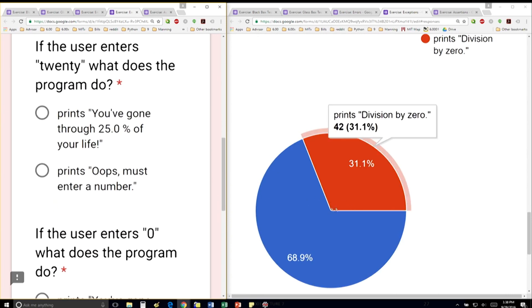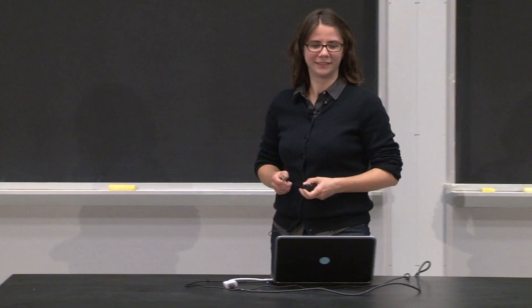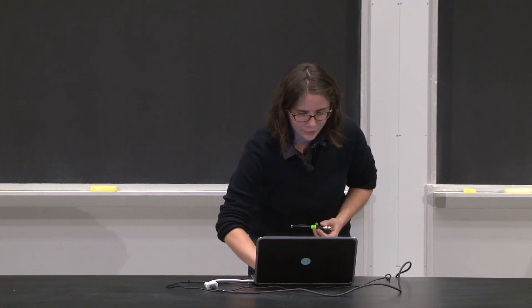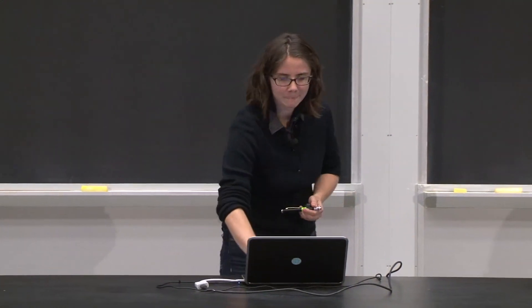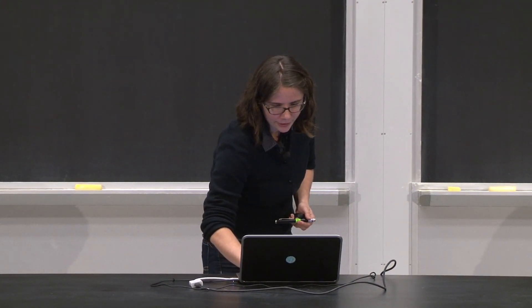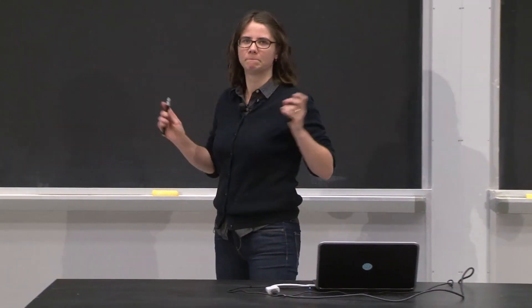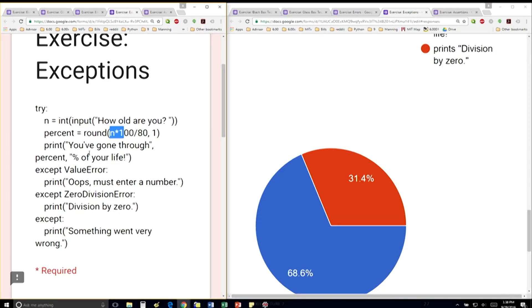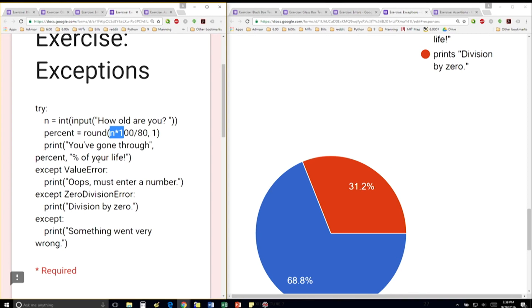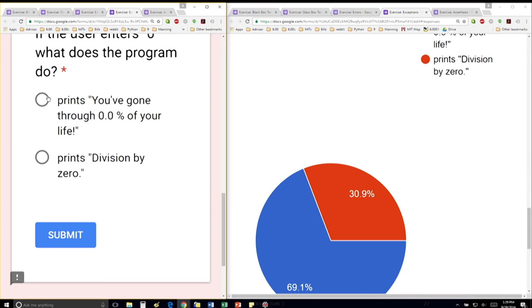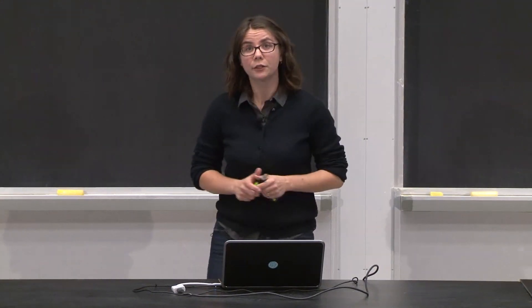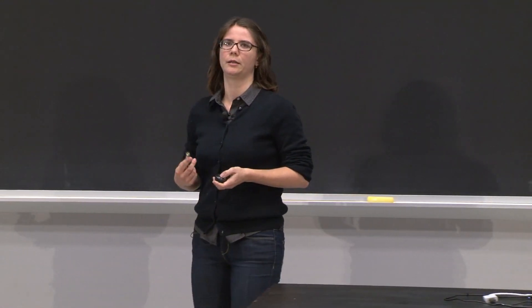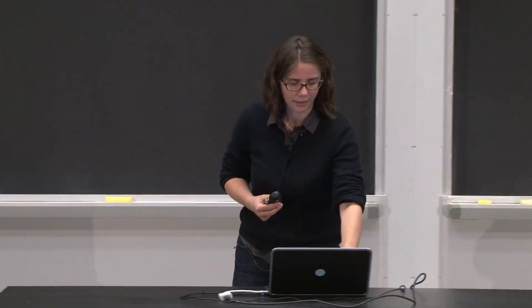The next one — I tricked some of you. The next one says, if the user enters zero, what does the program do? Well, we're going to take in zero, do zero times 100 divide by 80 — that's fine, it's always going to be zero. We're going to round that to one, and then print that out. So no ZeroDivisionError, no ValueError — everything went right. It's going to print out the normal result. The ZeroDivisionError only happens when you're trying to divide something by zero. In this case, we're not — zero is at the top of the fraction.